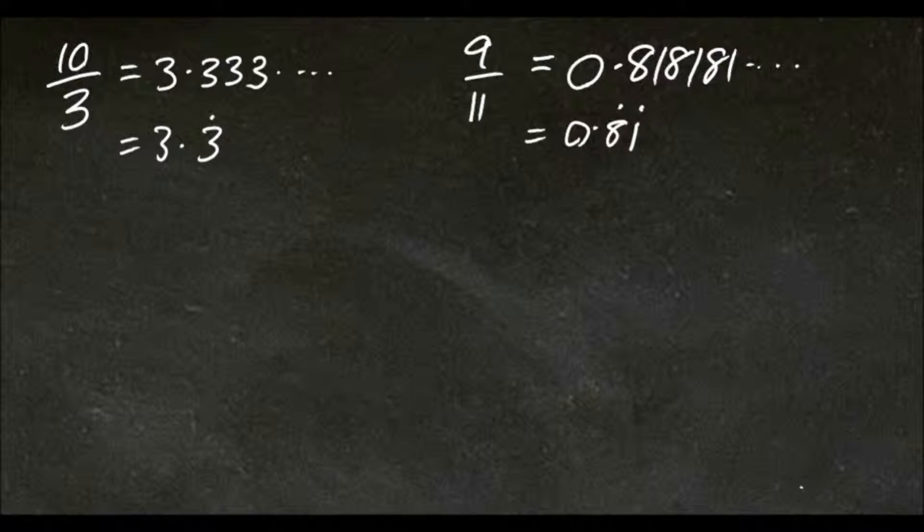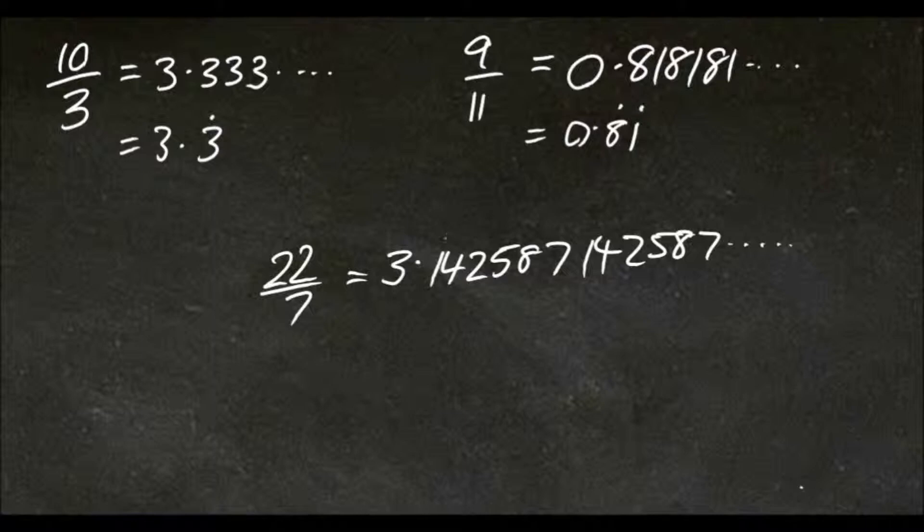We'll look at one last example, 22 over 7. So this would be 3.142587, then 142587, etc. So it has a sequence of numbers which it repeats.